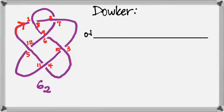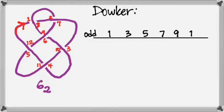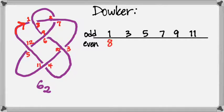In the standard form of Dauker notation, we list the odds on the top: 1, 3, 5, 7, 9, and 11. This will be the same for every 6-crossing knot — I always have those odds on top. It's what I match them with on the bottom that determines which type of 6-crossing knot we have. In the knot we just traced, 1 is paired with 8, 3 with 10, 5 with 12, 7 with 2, 9 with 6, and 11 with 4. This Dauker notation is now enumerating the 6-2 knot.